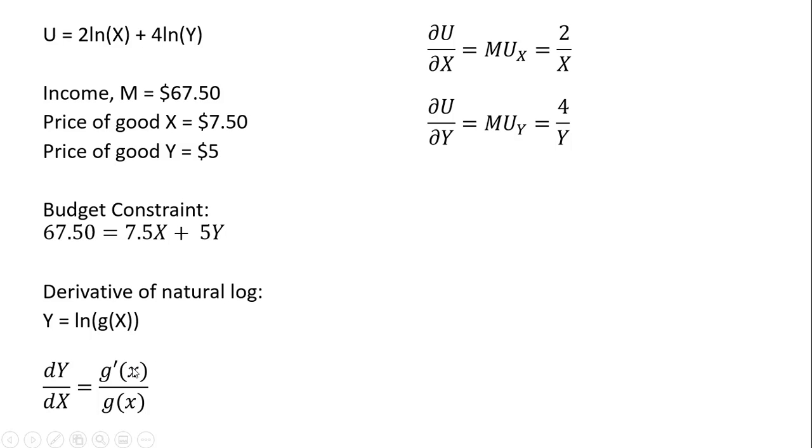In the numerator, we're going to have the derivative of Y, which is just 1. And that 1 is being multiplied by the 4 out in front here. So we've got our marginal utilities.